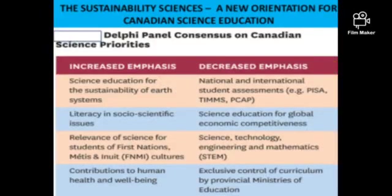A Delphi panel reached consensus on Canadian science priorities. Increased emphasis is given to science education for sustainability of Earth's health systems, literacy in socio-scientific issues, relevance of science for students of First Nations, Métis, and Inuit (FNMI) cultures, and contributions to human health and well-being. Decreased emphasis is placed on national and international student assessments like PISA, TIMSS, and PCAP, science education for global economic competitiveness, STEM, and exclusive provincial curriculum control.